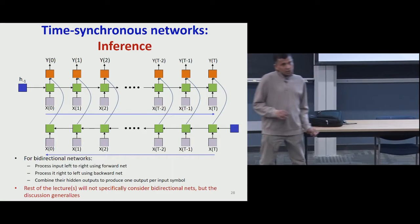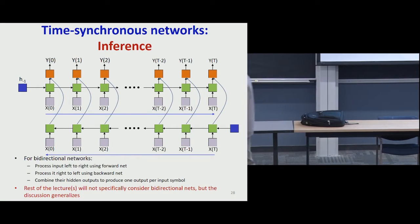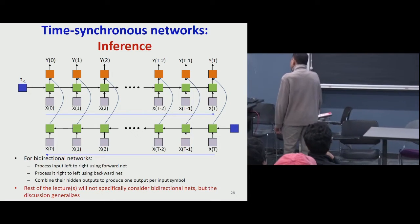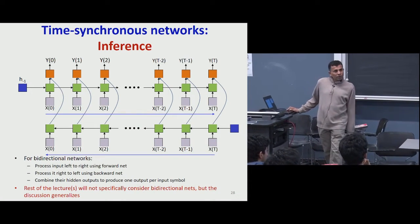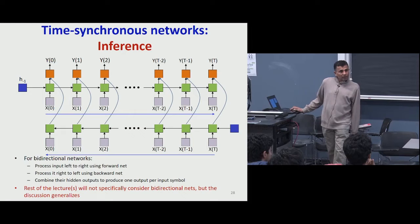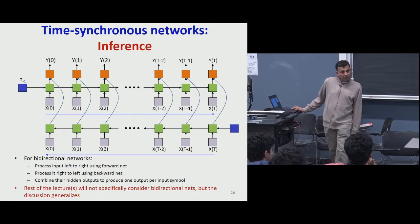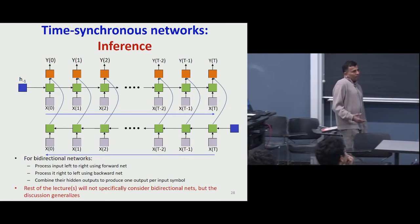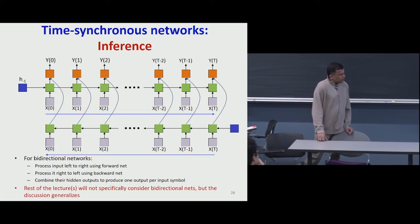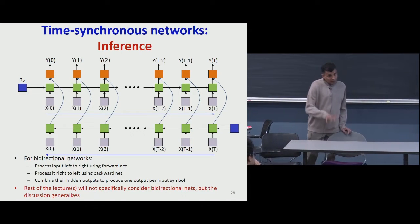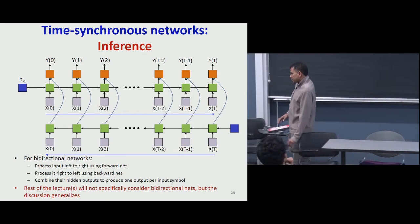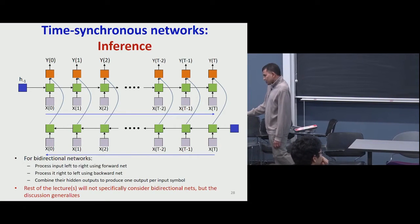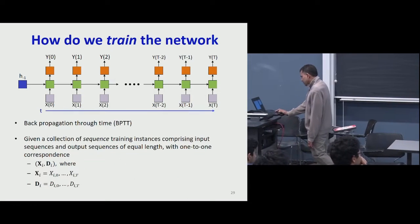In the rest of the lecture — both today and the next class — I'm going to be using unidirectional inference as my basic platform for explanation. But in your minds, you must generalize this to the bidirectional versions. So how do you actually train these networks? We use backpropagation through time. You're given a collection of sequence training instances comprising input sequences and output sequences of equal length with one-to-one correspondence.